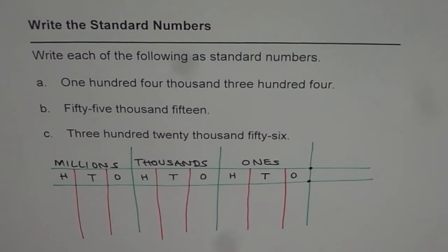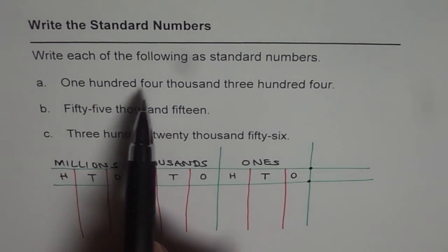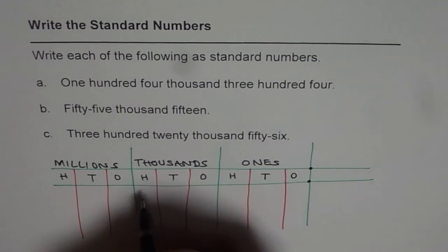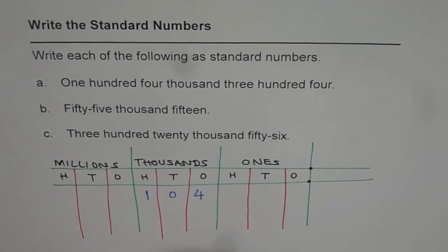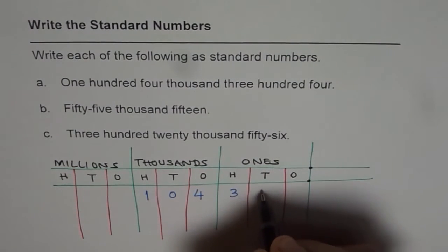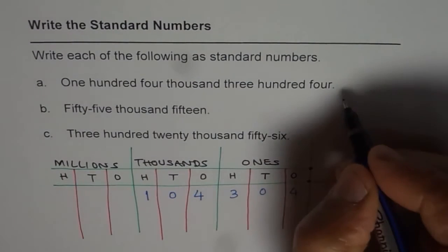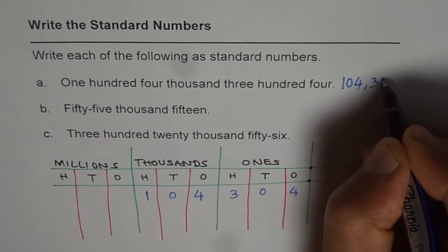Let's start with A, which is one hundred four thousand, three hundred and four. In the thousands group we write one hundred and four, and in the ones group we write three hundred and four. So the answer for A is 104,304.